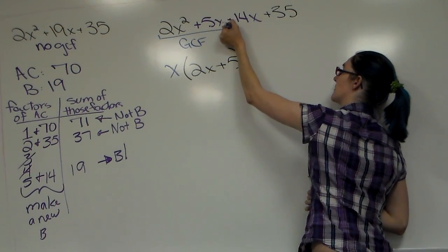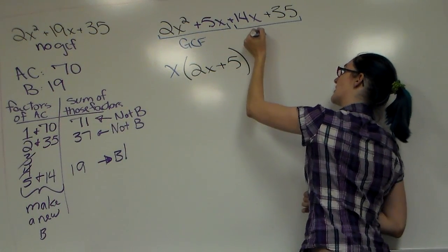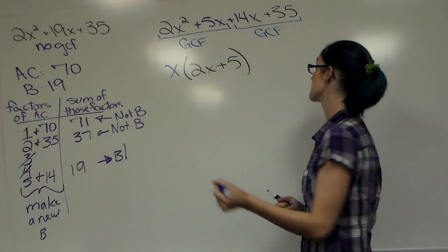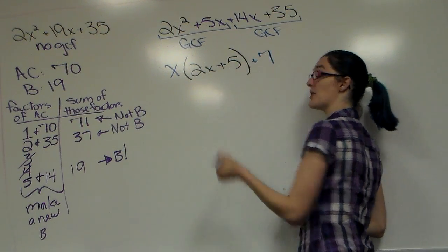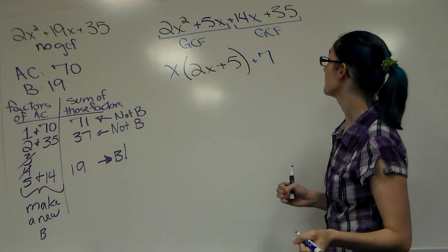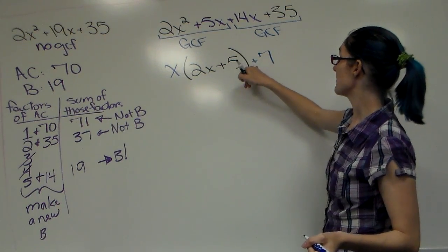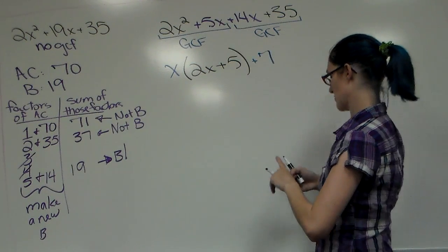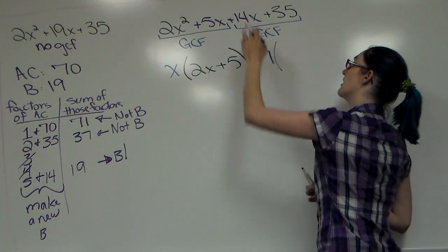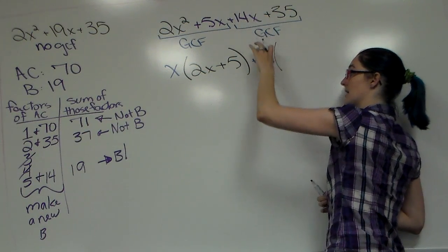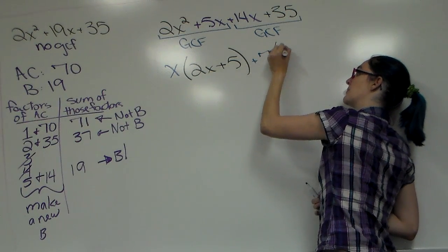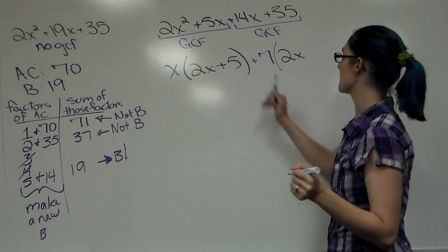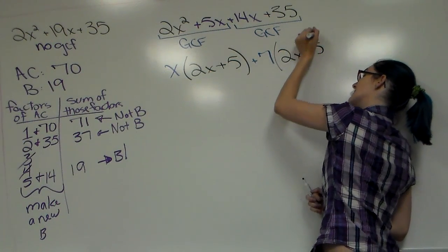Your second ones, do a GCF, that's your second group. 14 and 35, both divisible by 7, not just 7 but a positive 7. Make sure you get a plus sign coming down. Always, whatever this sign is should always be whatever your first sign was. No x's in both, so we're going to skip past the variables. 14x, a positive 14x divided by a positive 7 gives me a positive 2x. Positive 35 divided by a positive 7, a positive 5.